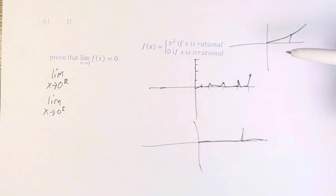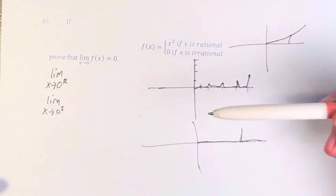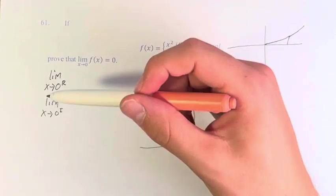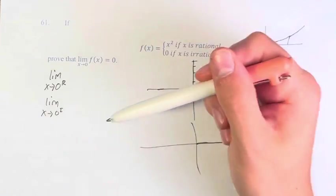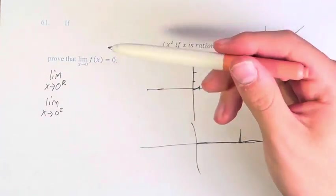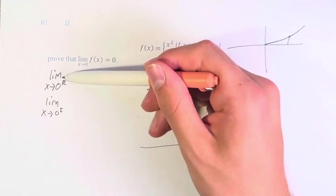then we know as we approach 0 on x, f of x is going to approach 0. Because it means for any number that you plug in, as we're getting closer and closer to 0, it's going to approach 0 no matter whether it's this type of number or this type.